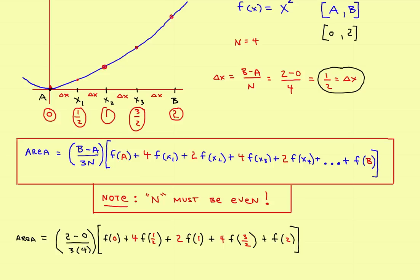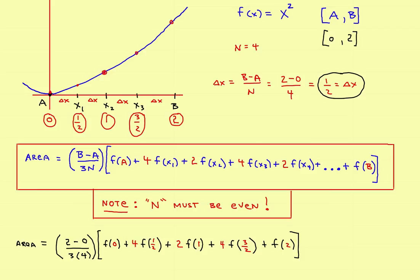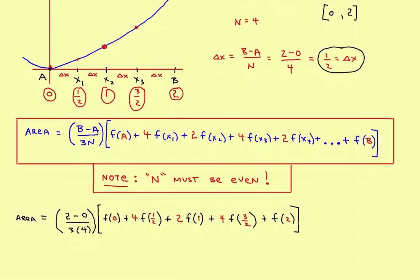That's essentially the hard part of the problem. Just remember, don't forget the alternating pattern of 4, 2, 4, 2 as you go across, and then evaluate the function at these points. When you evaluate the function, that just means you're going to plug them into x². Whatever the function is, we'll plug it into x². So we'll take zero and plug it into x², one-half and plug it into x², and so on.